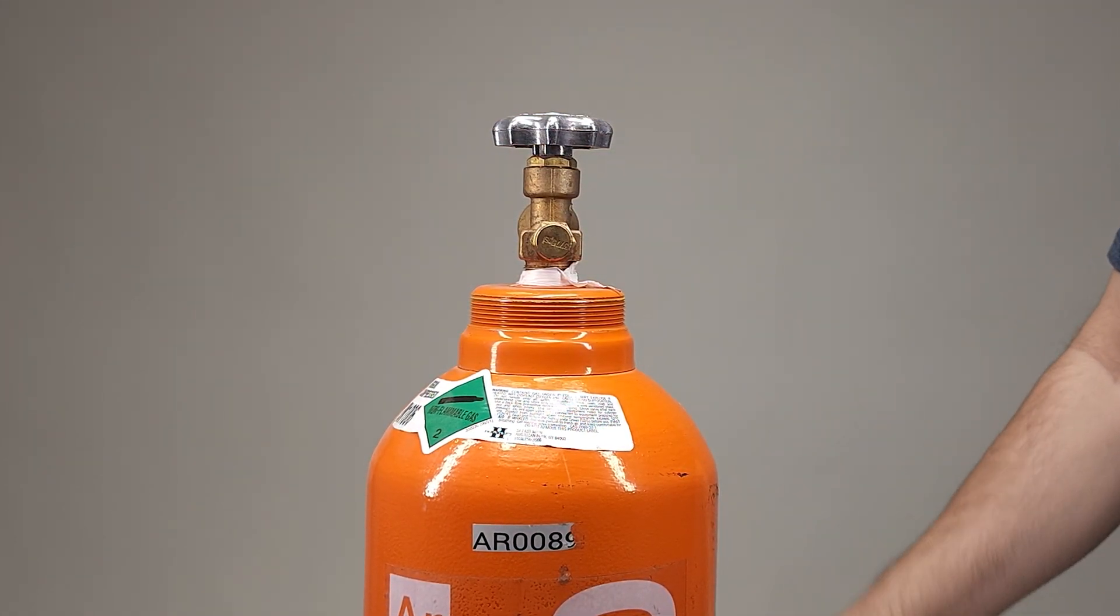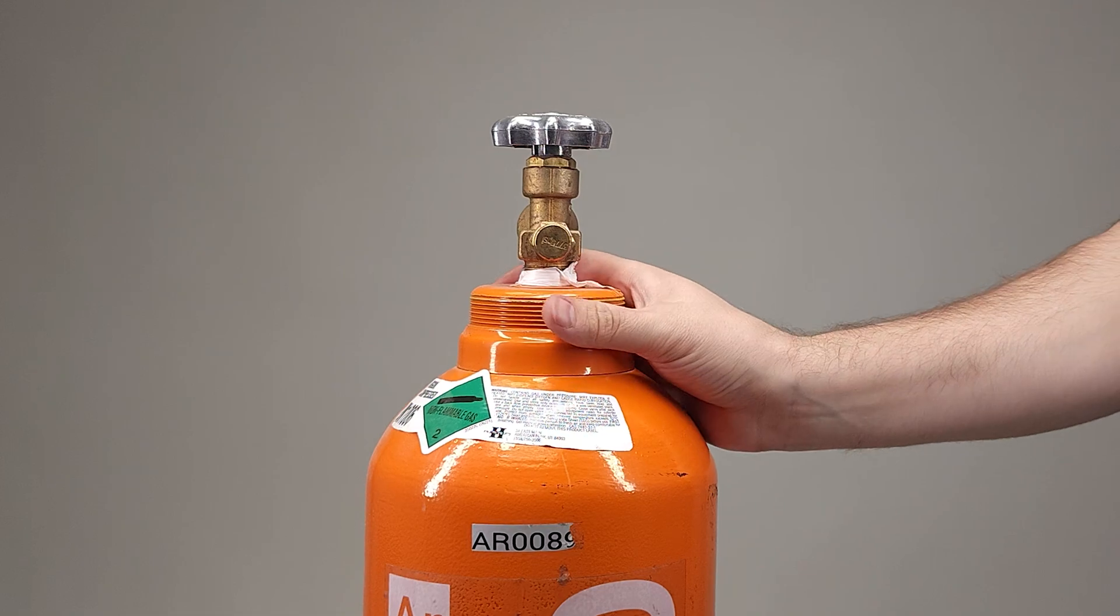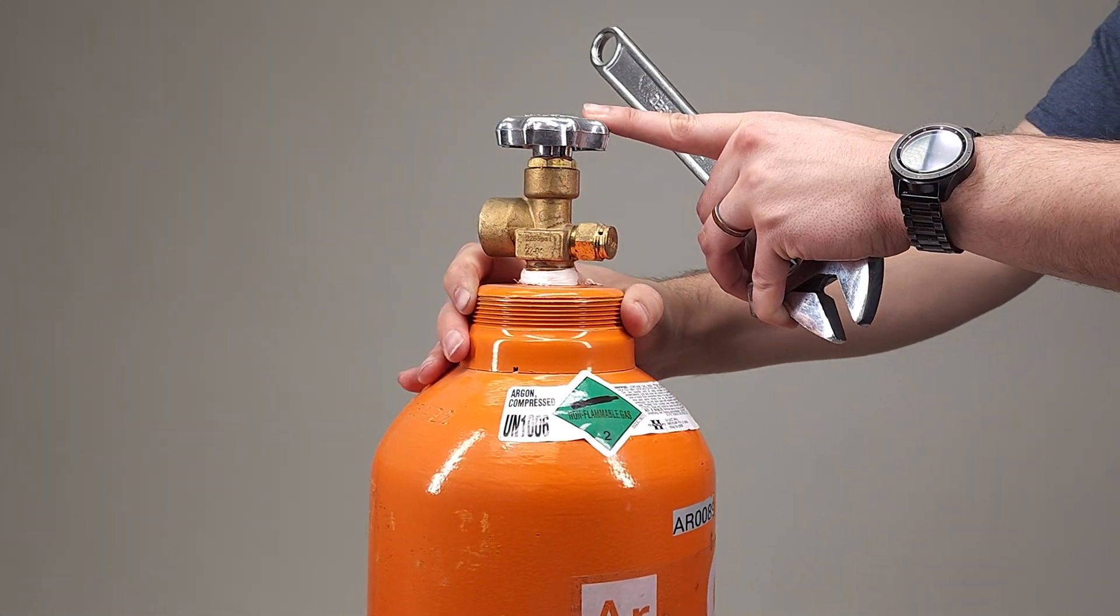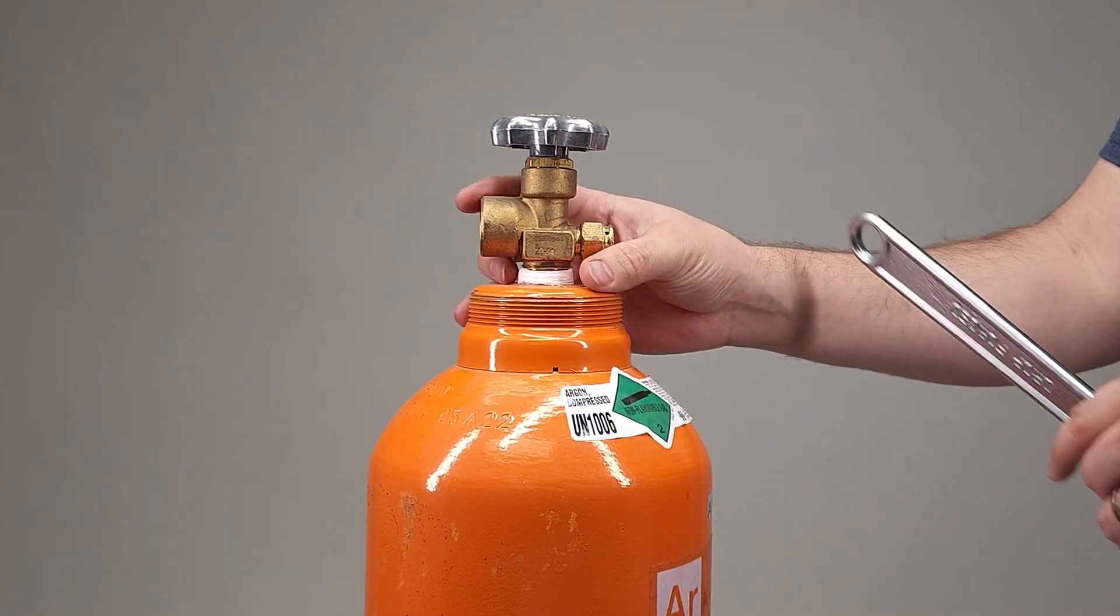Once this is fully twisted off it'll expose the valve stem and then we can also see where we're going to be putting our argon regulator.